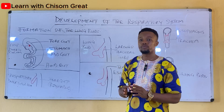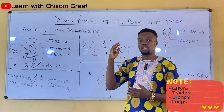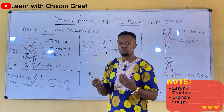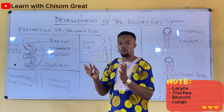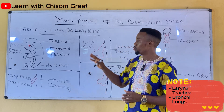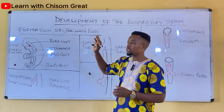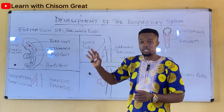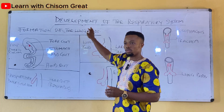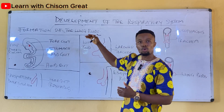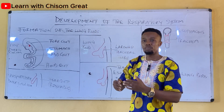When we talk of the respiratory system, we are looking at the larynx, the trachea, the bronchi, and even the lungs. The respiratory system came from the lung bud, so we'll be looking at the formation of this lung bud and how it came about.